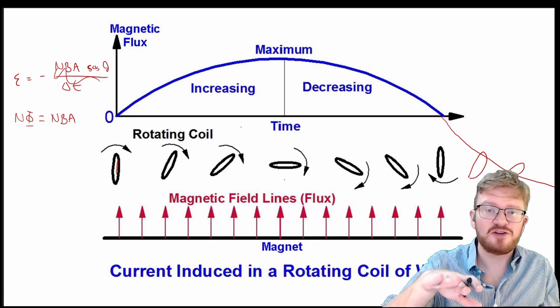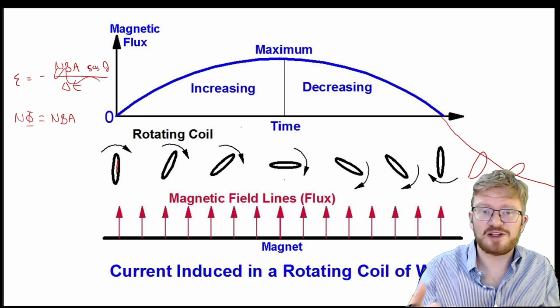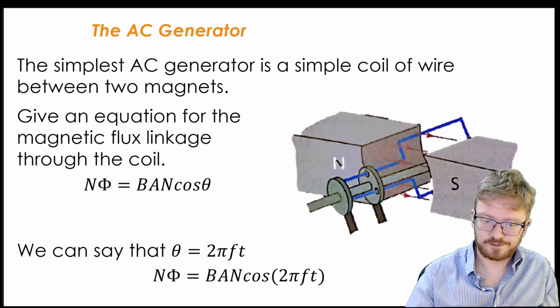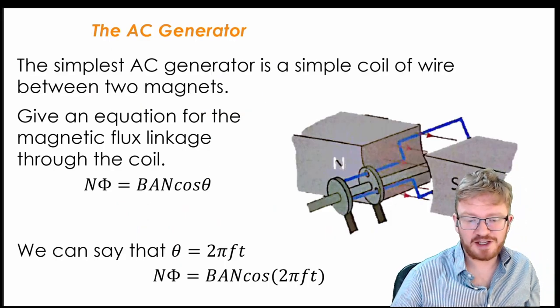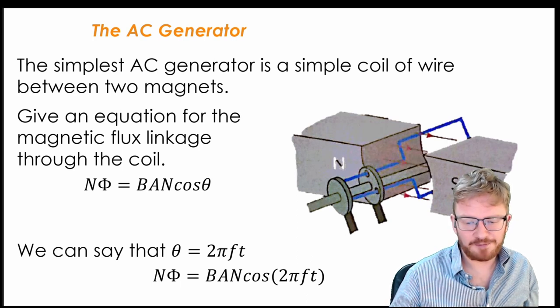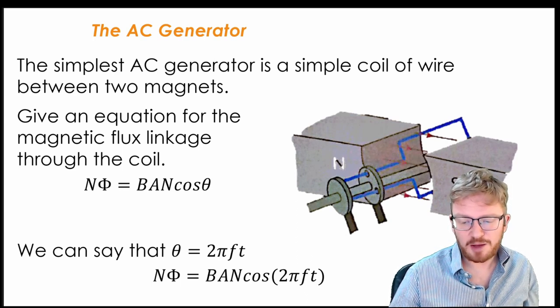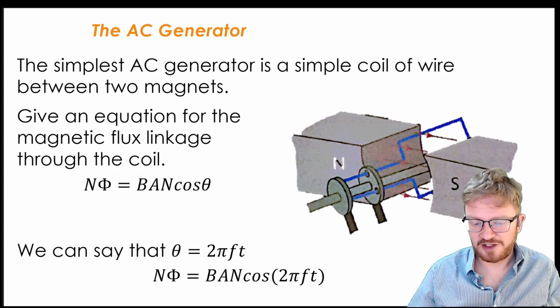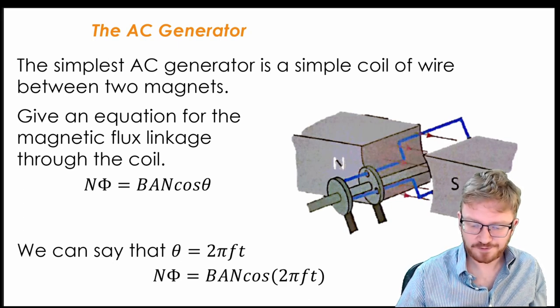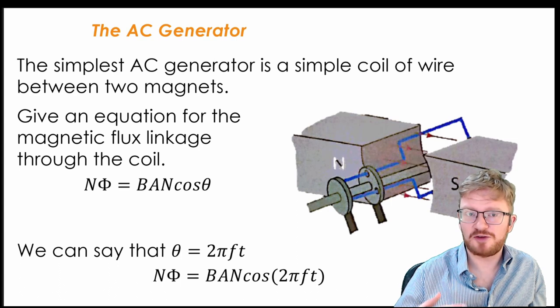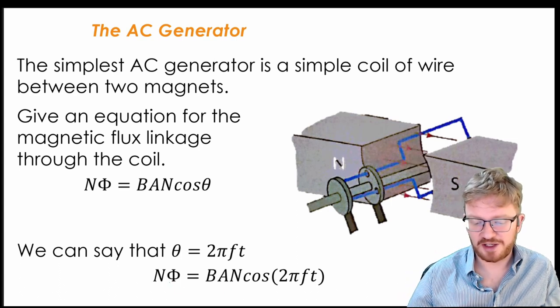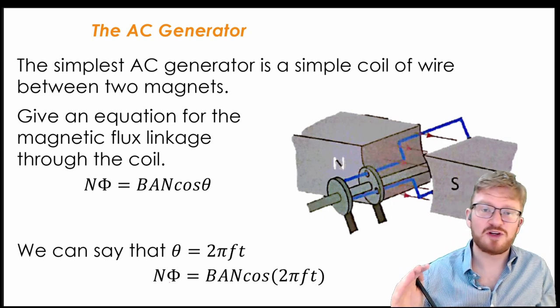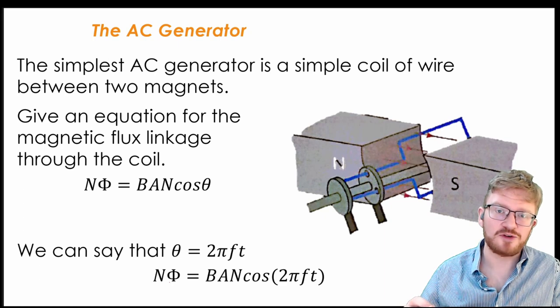Why does it go negative? Well, if you imagine that I flipped it upside down, when I flip it upside down, that's going to swap it over. So this gives us a really nice simple AC generator. The simplest AC generator we get is just a coil of wire between two magnets. And what we can see with that is we can say that the flux linkage is BAN cos theta. That's what we kind of did last lesson. Now, if you think about your circular motion stuff, you could also then say that n phi is BAN cos 2 pi f t. But don't worry too much about that, because this is more used on other examples. It doesn't come up so often for CIE.